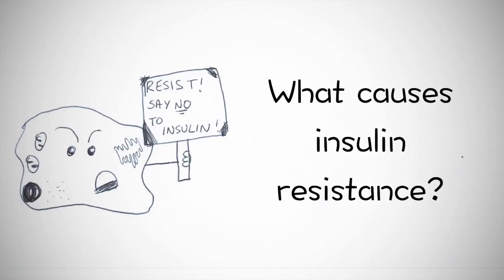At first, even reduced levels of insulin were enough to keep blood sugar levels in check. However, when cells develop resistance, everything becomes harder to control — blood sugar levels increase as insulin is no longer able to keep them in check.